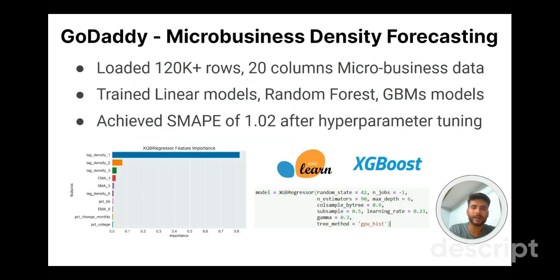Moving on to the second project — this was a regression problem where the goal was to predict a continuous value: microbusiness density. The dataset consisted of more than 120,000 rows and 20 columns. I employed various machine learning algorithms including linear regression, decision tree, random forest, and XGBoost. After hyperparameter tuning, I achieved a symmetric mean absolute percentage error of 1.02 using XGBoost.